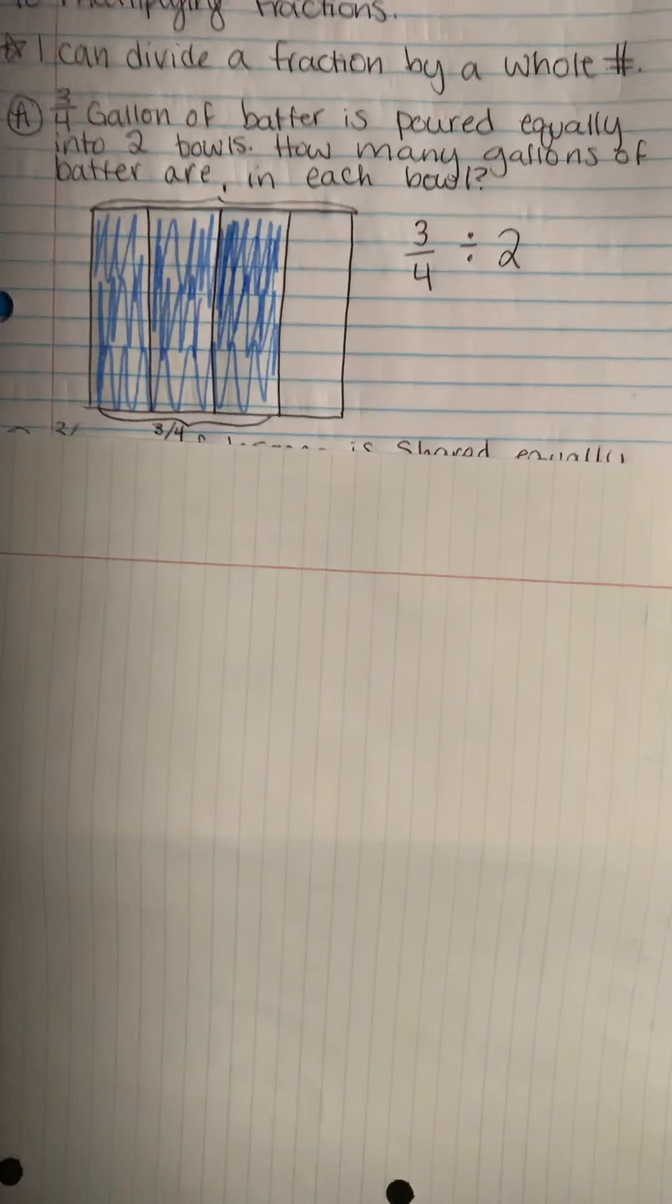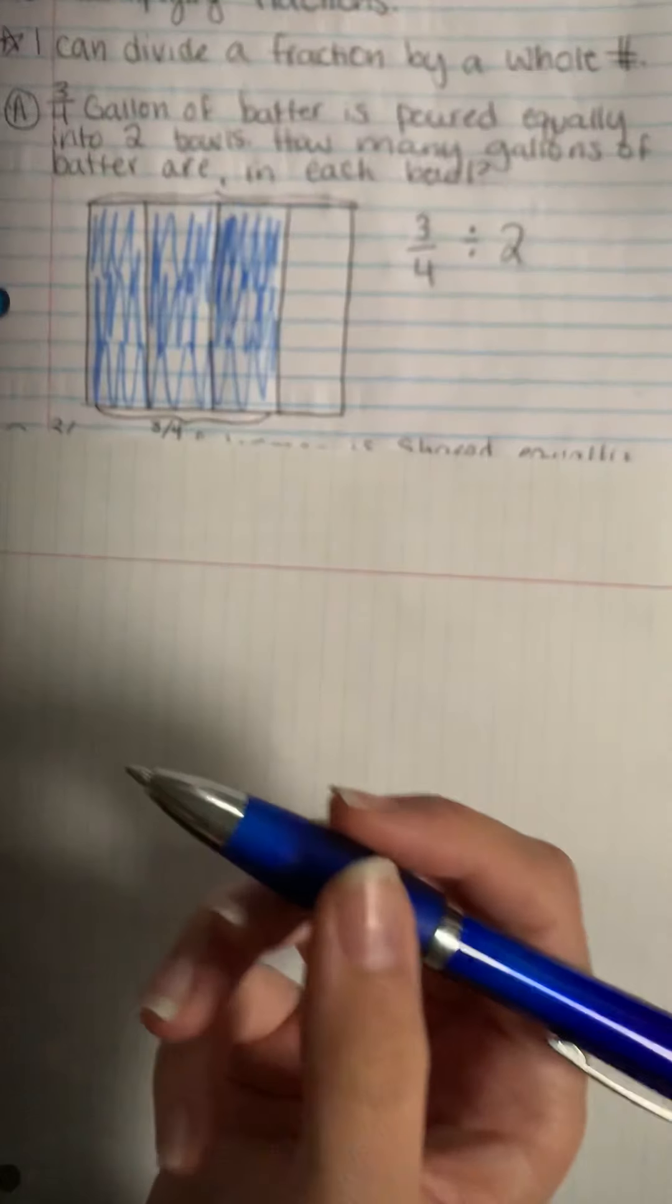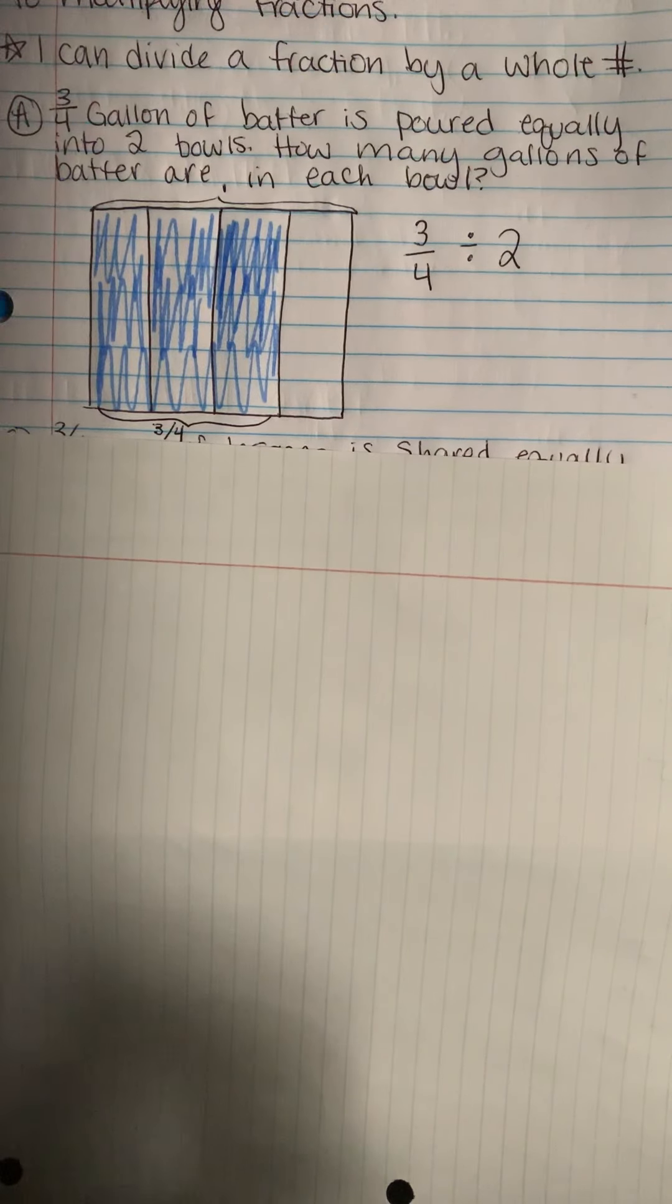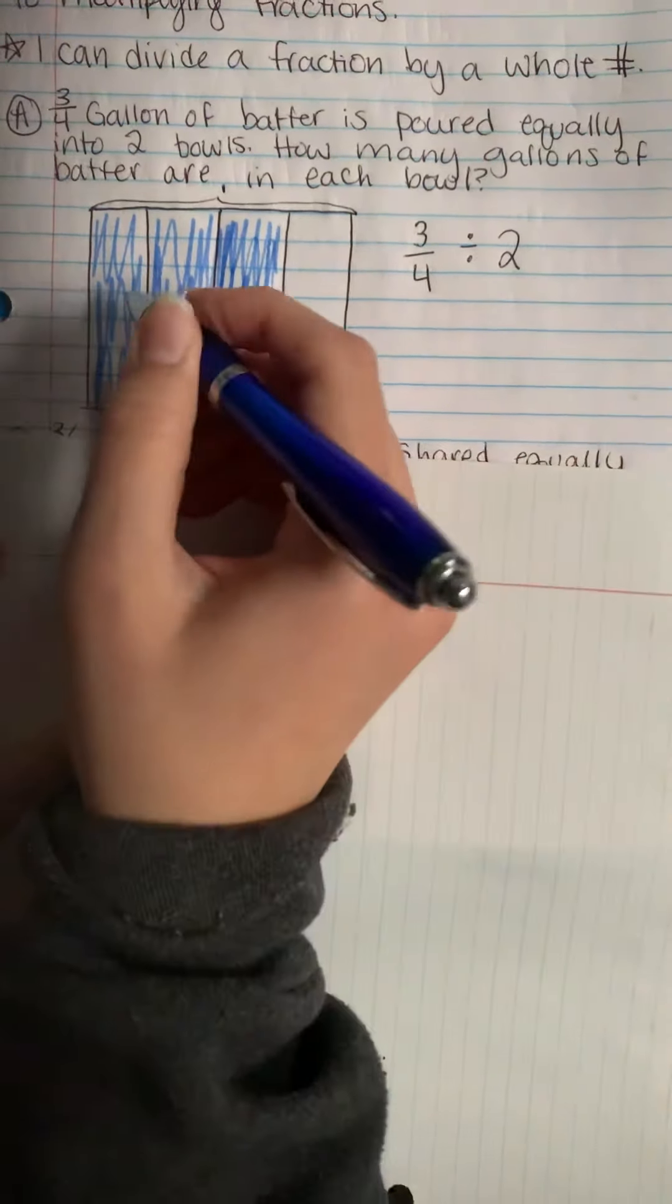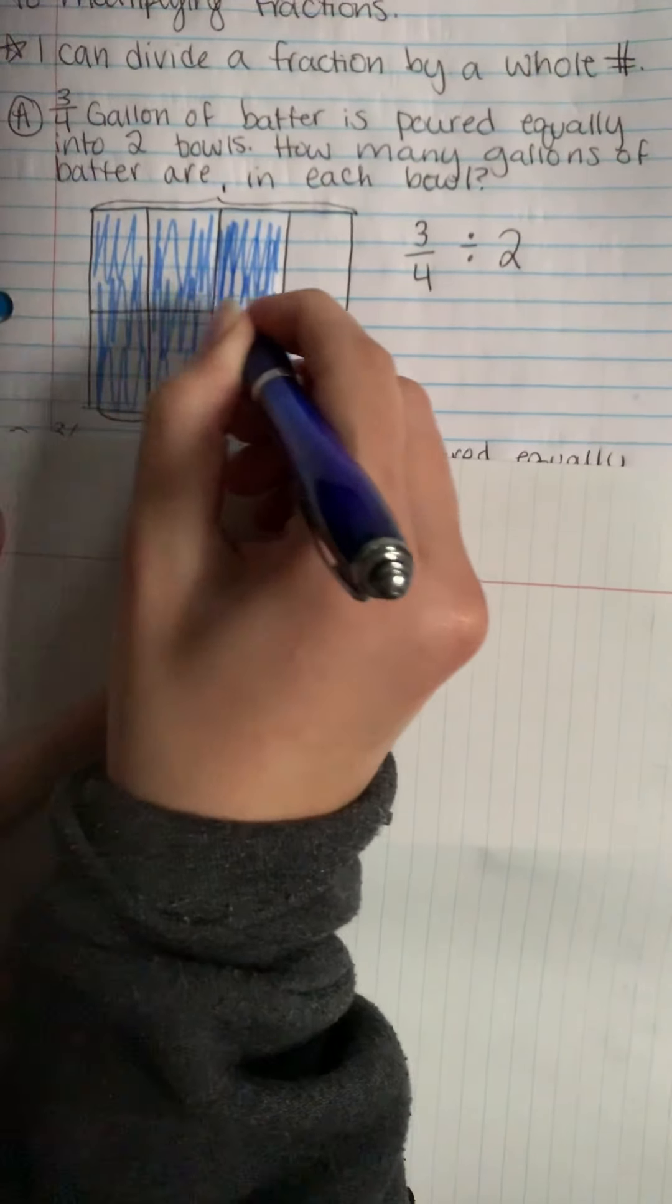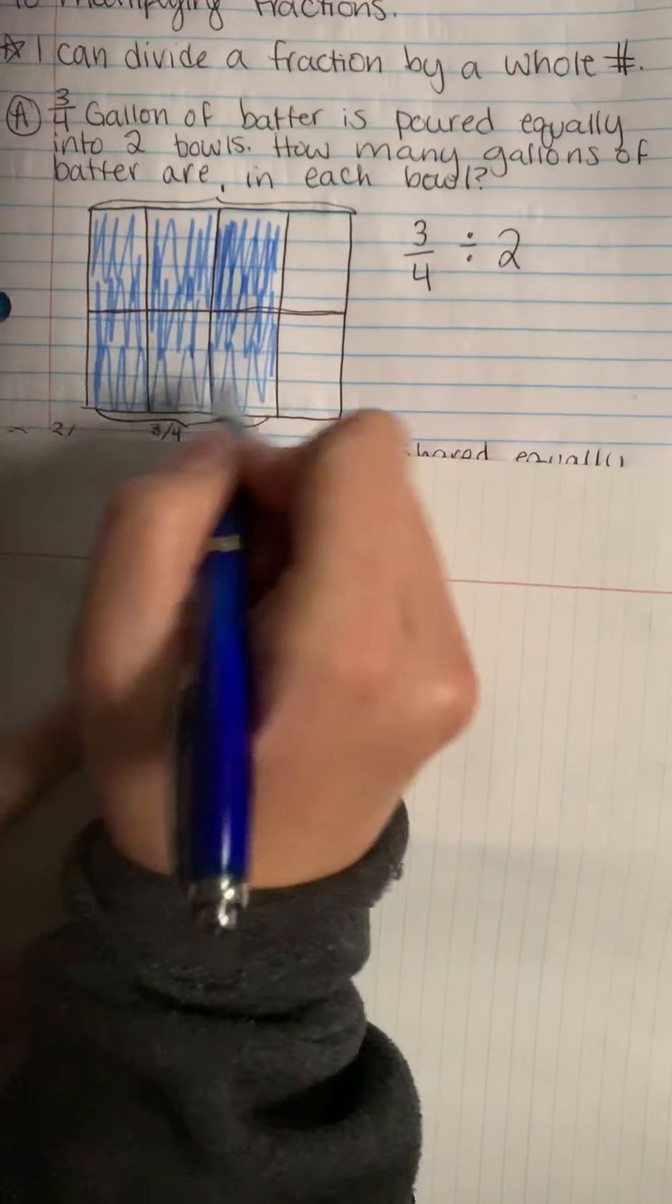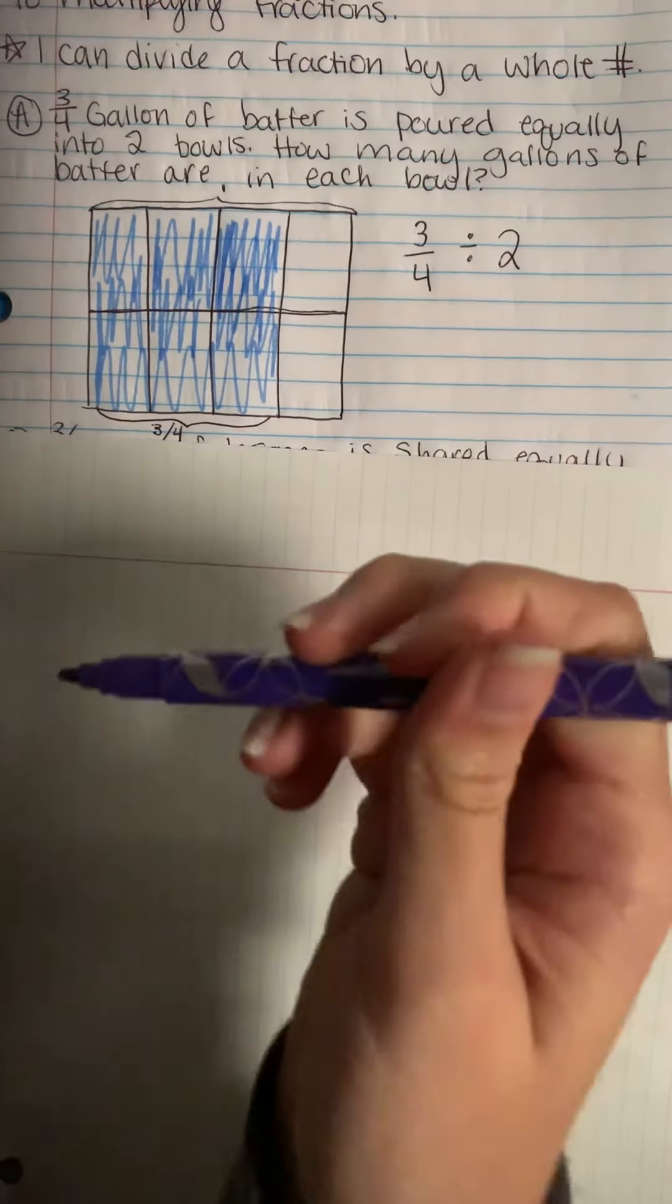So this is showing all of the batter that I have. Maybe I only made three-fourths of all the batter. Then I'm going to show my two bowls by drawing another line horizontally to partition my model into two equal parts. So this is showing the first bowl up here and the second bowl down here.